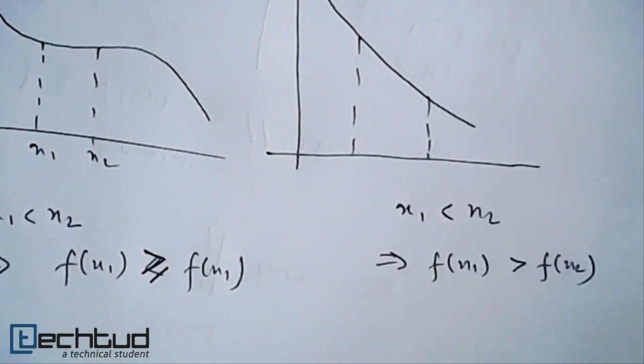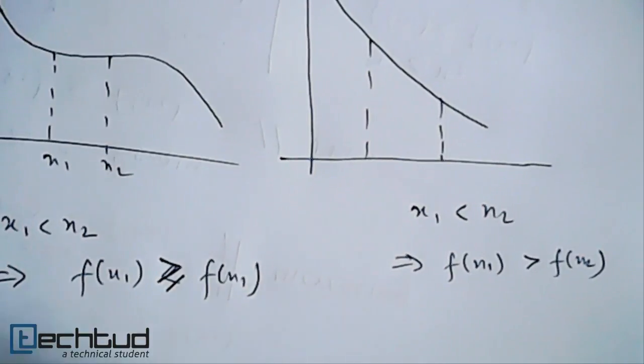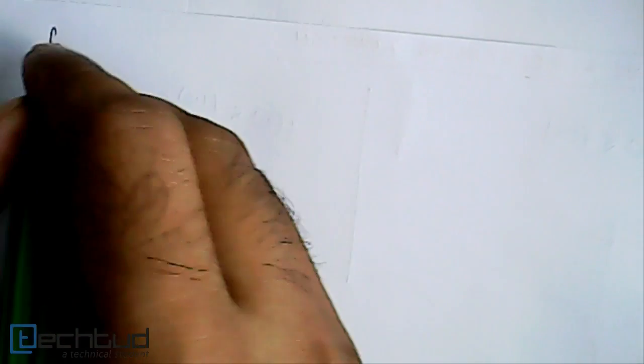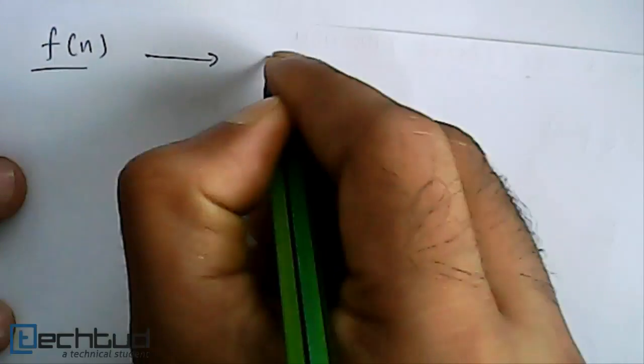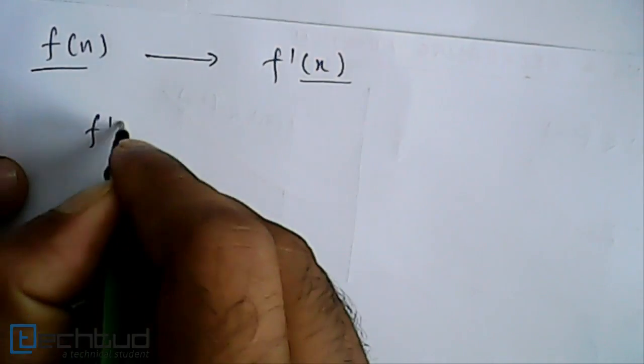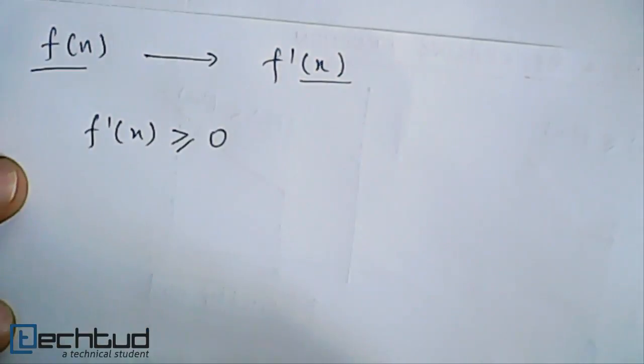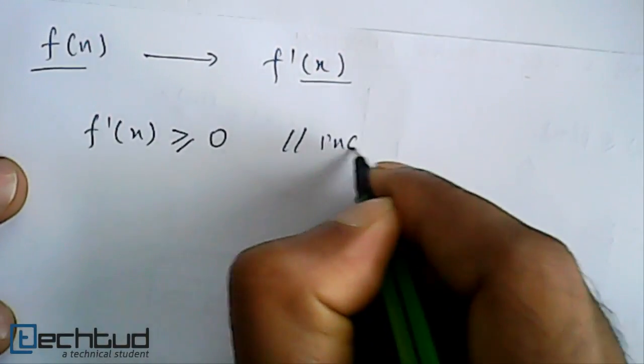Now we will solve problems using the derivative method. We can check whether a function is strictly increasing, increasing, decreasing, or anything else. The method is: for a function f(x), we find the derivative f'(x). If f'(x) is greater than or equal to 0, we say the function is increasing.